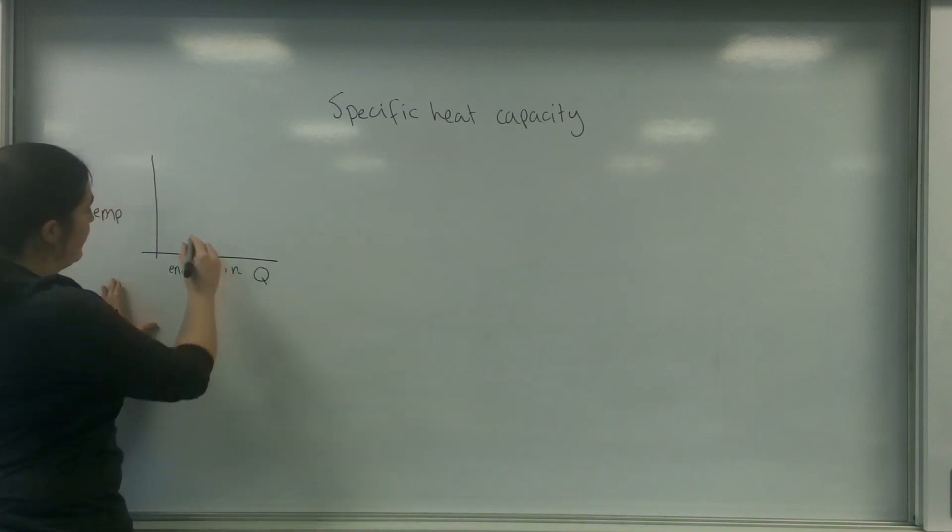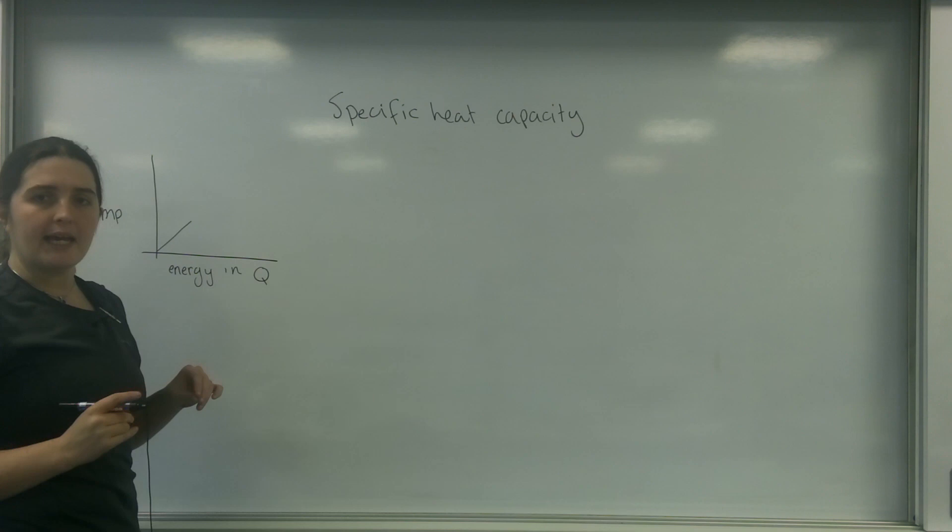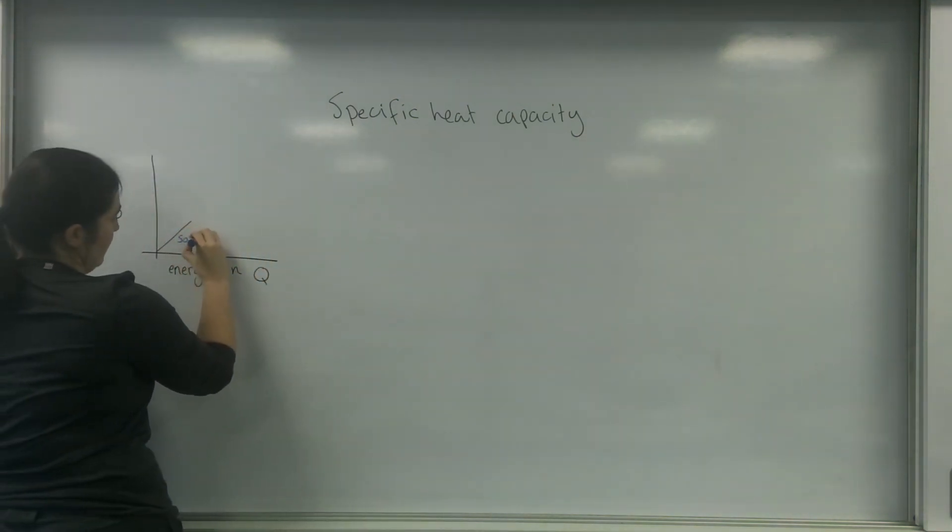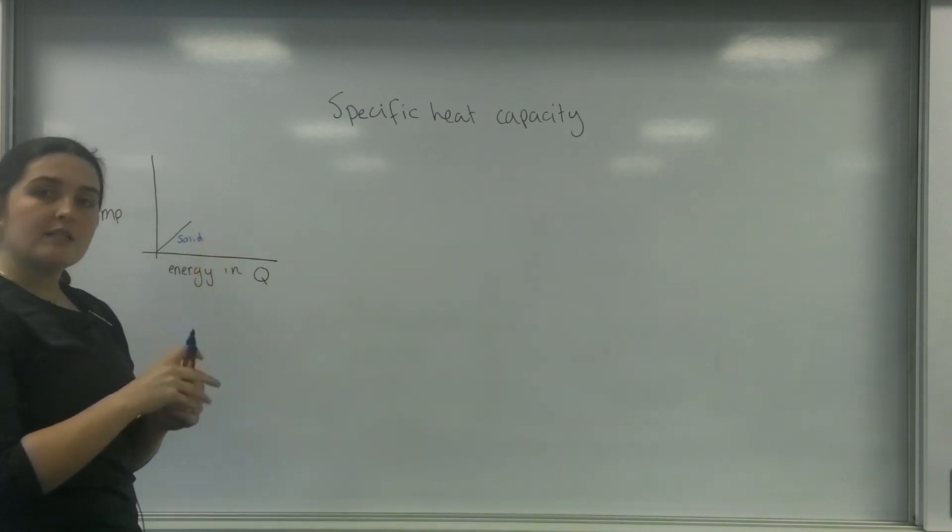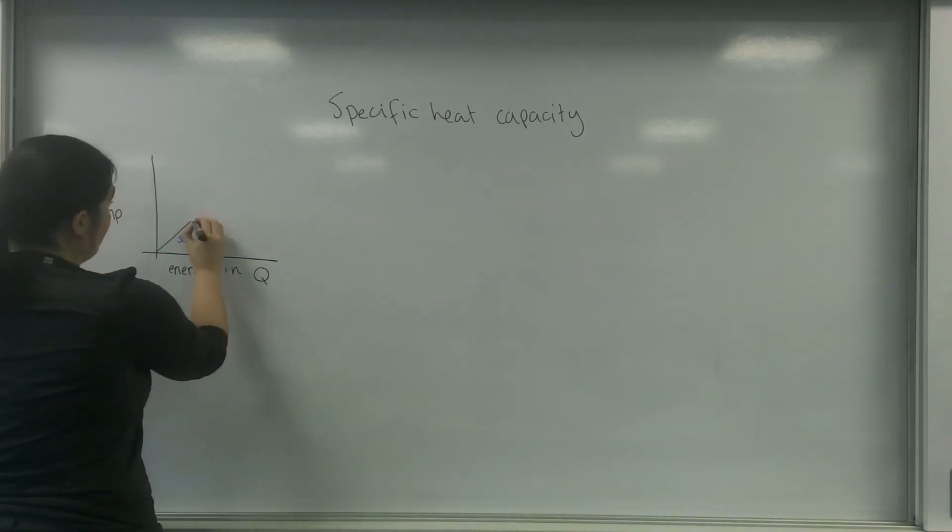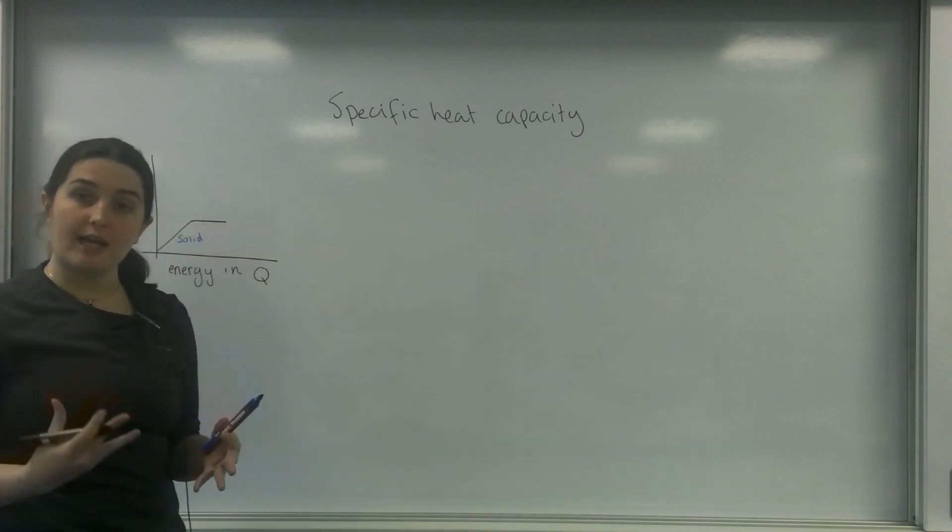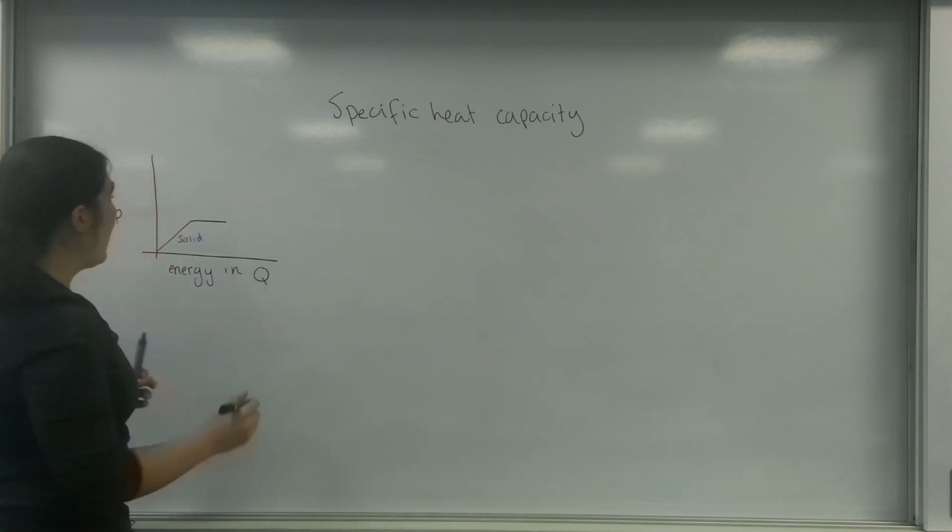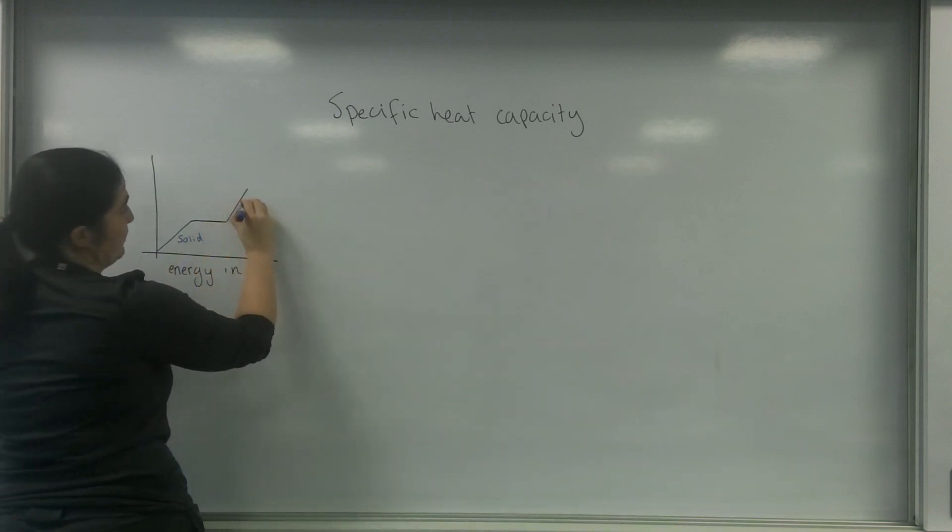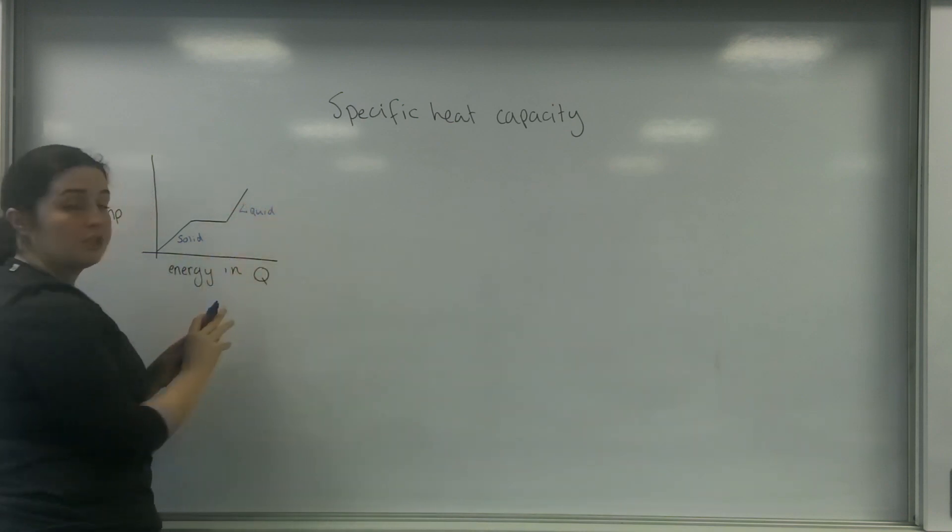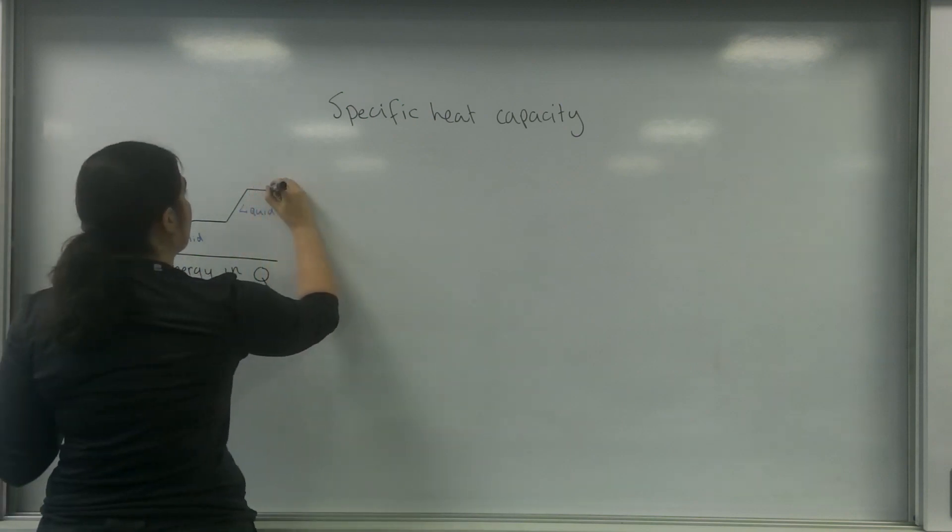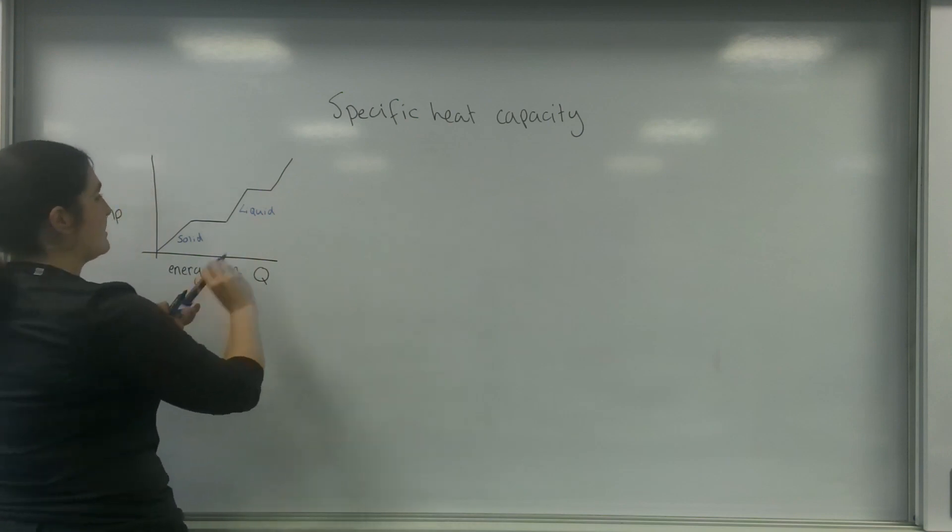To start with, as I add energy, the temperature would rise. This is from its solid state here. Then what happens is there's a point where that solid will become a liquid, and the temperature doesn't change. Once it's all been changed of state, the temperature increases again. This is the liquid stage. We get to the point here where it changes again, and then we have a gas.